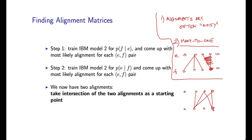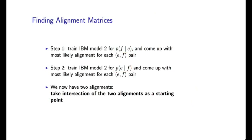So here's how this is generally done. The trick is that we can make the observation that the IBM models can be trained in both directions. So we can train a model for the conditional probability of a French sentence given the English — this is what we've seen so far. But I can also just reverse the two languages and train a model for English given French. We can find the most likely alignment under each of these models in each of these two directions, and now we're going to have two different alignments for each training example. The intersection of these alignments turns out to be a very reliable starting point for the alignment process. Let me illustrate this with an example.